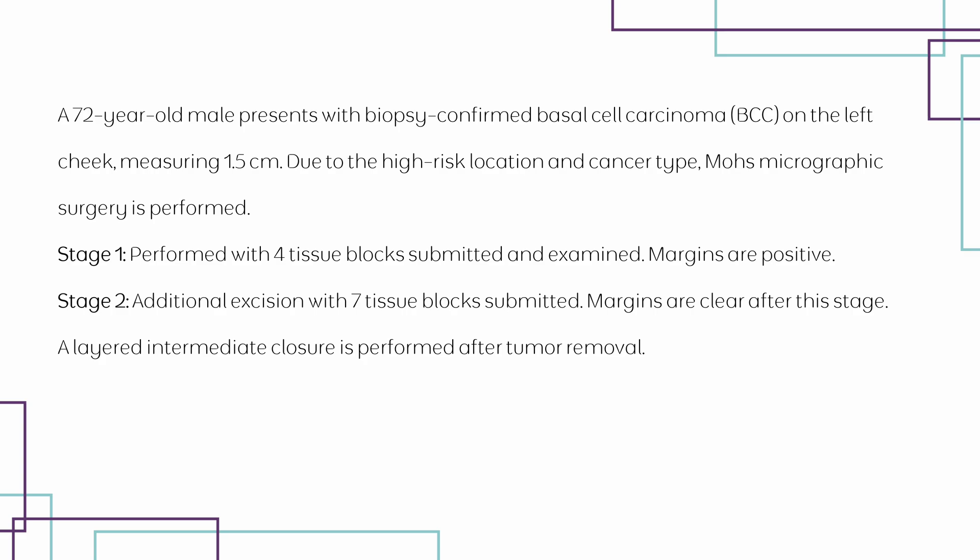For stage 1, four tissue blocks are submitted and examined, and margins are returned as positive. For stage 2, additional excision with seven tissue blocks are submitted, and margins are clear after this stage. A layered intermediate closure is performed after tumor removal.